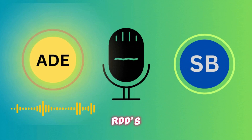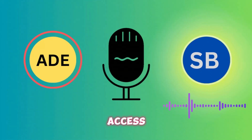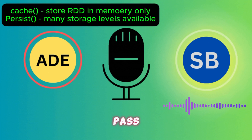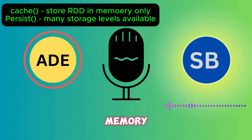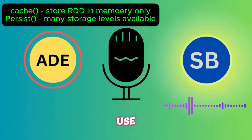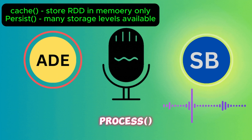How can you persist RDDs in memory for faster access? To persist an RDD in memory for faster access in Apache Spark, we can use either the cache or persist methods.